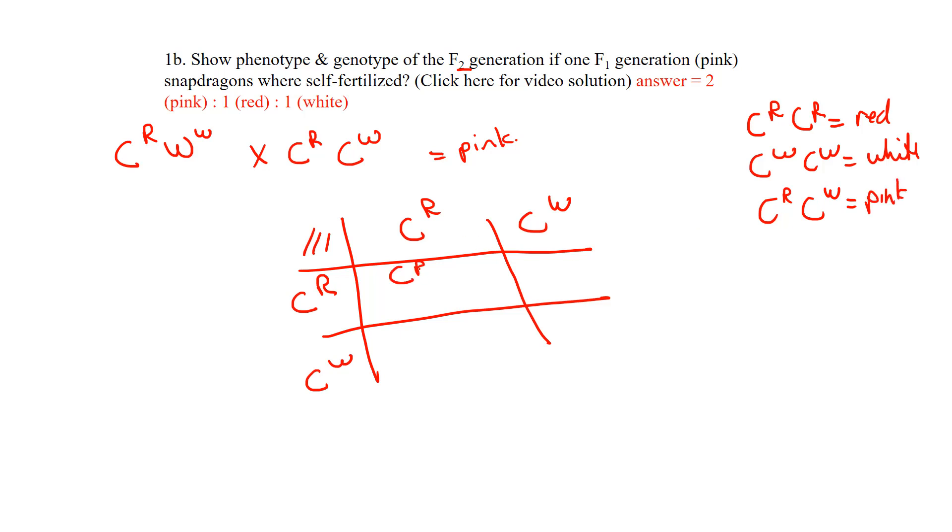Fill in the Punnett square: C^R C^R gives a red phenotype. C^R C^W gives pink. We're simulating fertilization where two gametes come together to create the offspring genotype. The other cross also gives pink, and C^W C^W gives white.